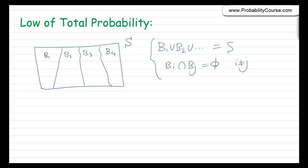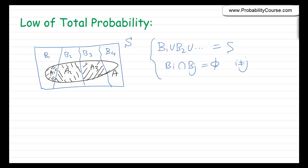Now, suppose that I have any other event A — let A be any other set in S, such as this one. If you look at the picture here, we see that A is also partitioned into four sets. Let's call this one A1, this part A2, this part A3, and this part A4. In other words, we define A1 to be A intersection with B1, A2 is A intersection with B2, and so on.